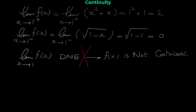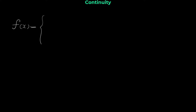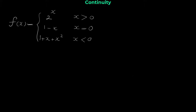Let me show you another example. Now look at this function: f of x is given by 2 to the x when x is greater than 0; when x equals 0 we are given 1 minus x; and when x is less than 0, the function is 1 + x + x². We want to check if this function is continuous at 0.